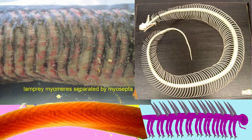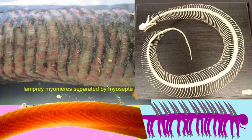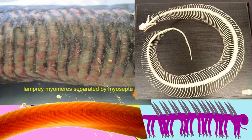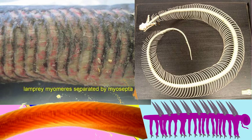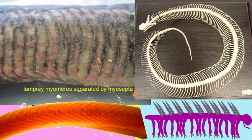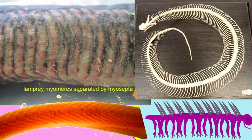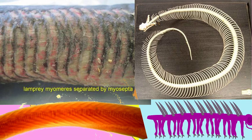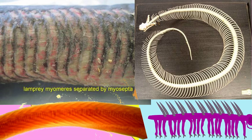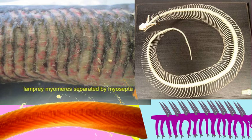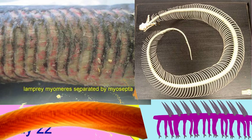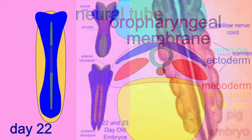Many animals are segmented. Their anatomical structure has been achieved through repeating a basic unit of structure, and these repeating elements can be modified afterwards, as in adult humans, but this segmentation was important in establishing the body of the individual. This is a major feature of both vertebrates and invertebrates.